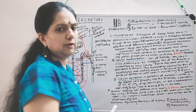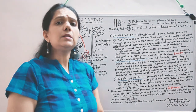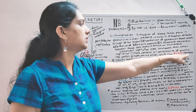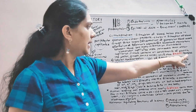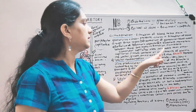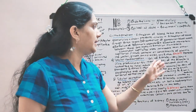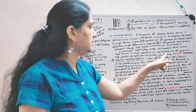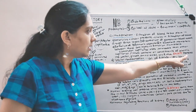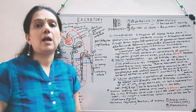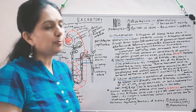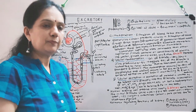What is the filtrate composed of? It contains all the components of blood plasma except proteins. It has water, glucose, amino acids, ions like sodium, potassium, chloride, calcium, bicarbonate, hydrogen ions, and urea — everything present in blood plasma except proteins. You can call this deproteinized plasma. That is the glomerular filtrate.